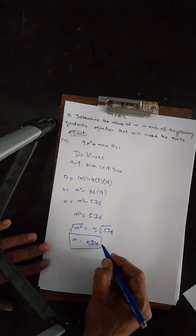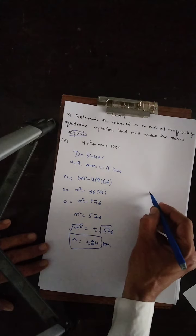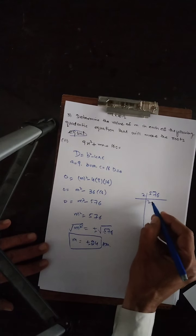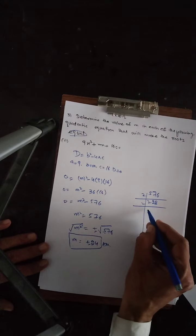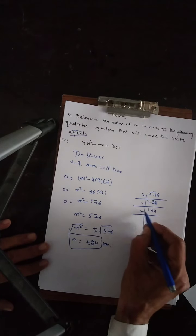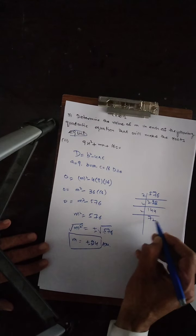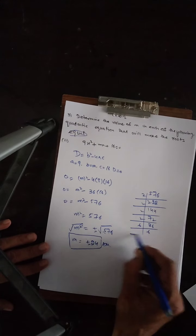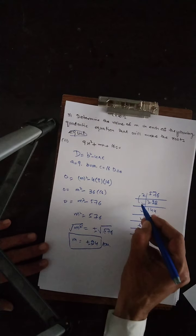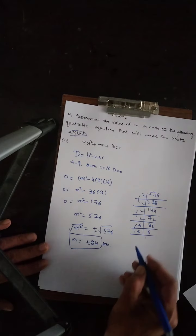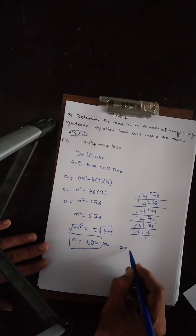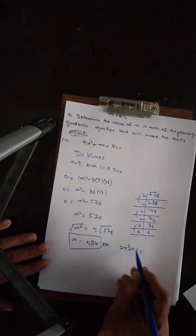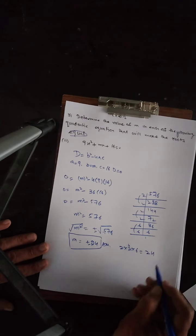How do we get the square root of 576? Either use a calculator or find the LCM and make pairs. Using LCM and pairing: 2, 8 — 36 times, 6 times, 6 times. One pair: 2, 2, 3, 6. So 2 to the power 4 multiplied by 6 equals 24.